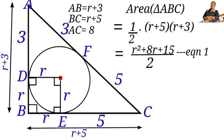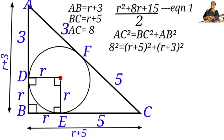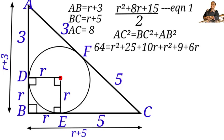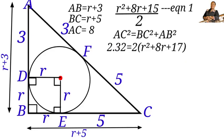Next, we need to find the value of R using the Pythagorean theorem, which states that the square of the hypotenuse equals the sum of the squares of the other two sides. In our triangle: AC² = BC² + AB². Substituting, 8² = (R + 5)² + (R + 3)², giving us 64 = R² + 10R + 25 + R² + 6R + 9, which simplifies to 64 = 2R² + 16R + 34. Factoring out 2: 32 = R² + 8R + 17.